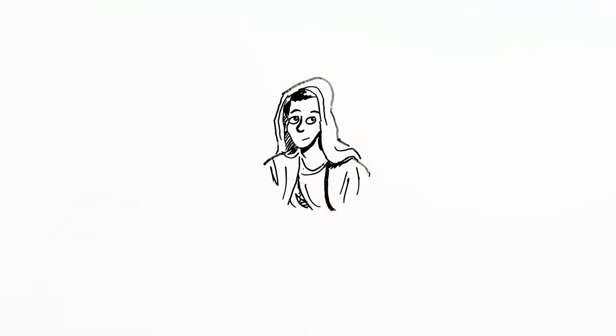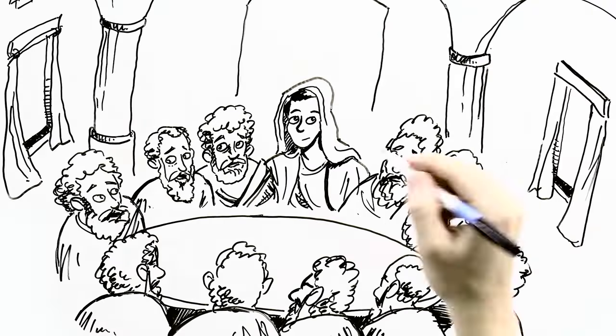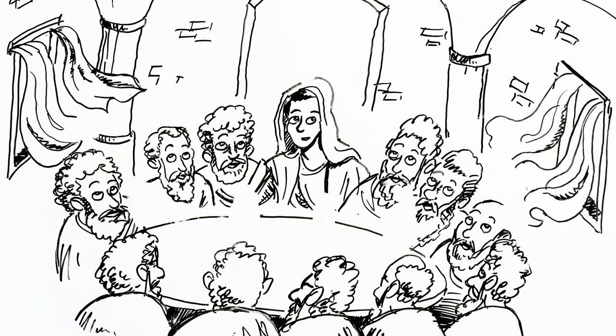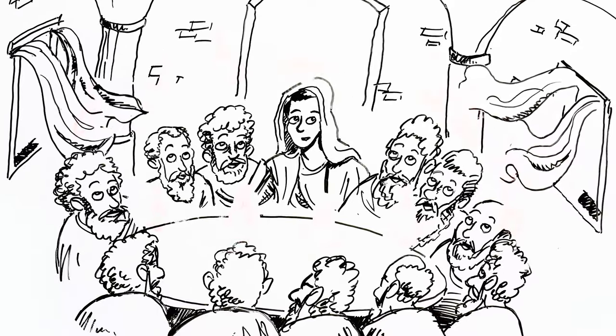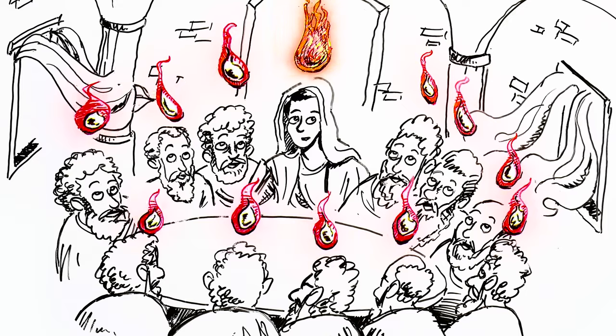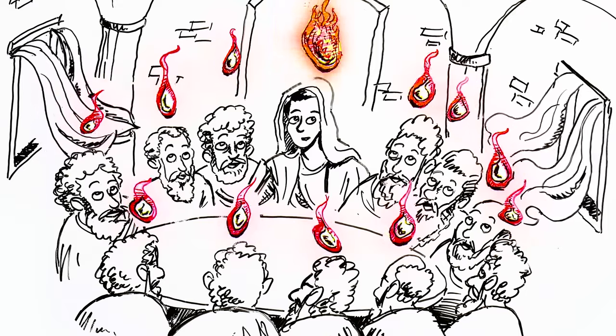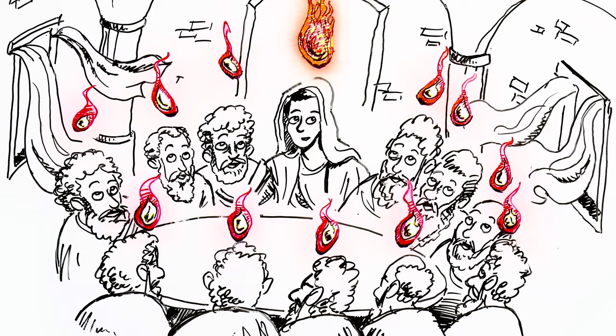Ten days later on the Feast of Pentecost, Mary and the apostles were hiding in the upper room in Jerusalem. They were scared and didn't know what to do. A strong wind blew and the apostles saw tongues of fire resting upon their heads. Their souls were filled with the Holy Spirit.